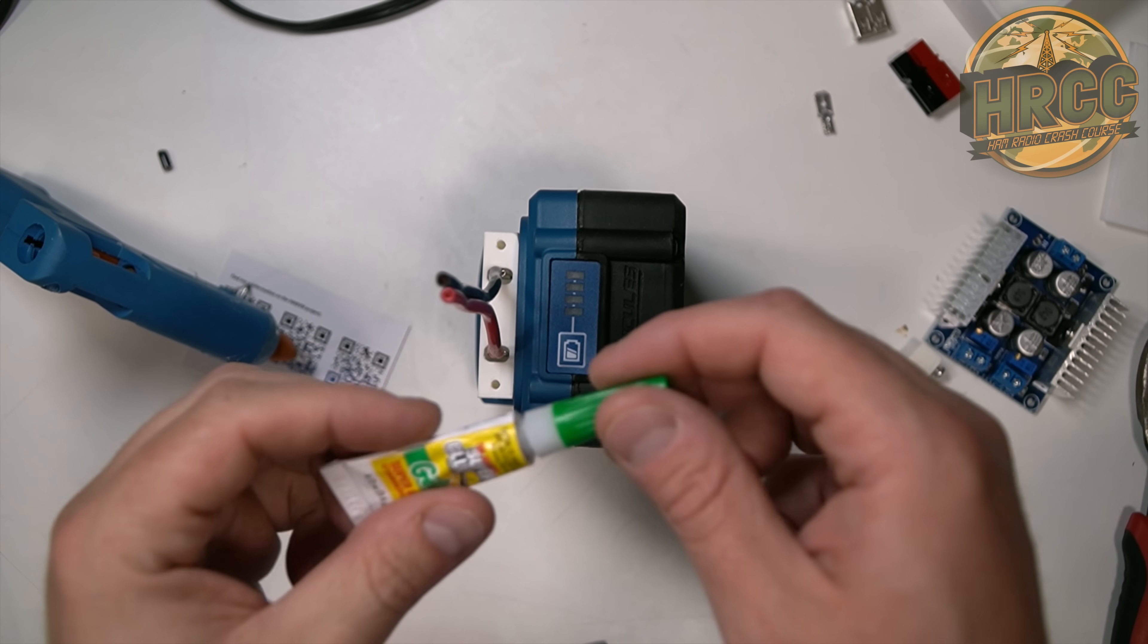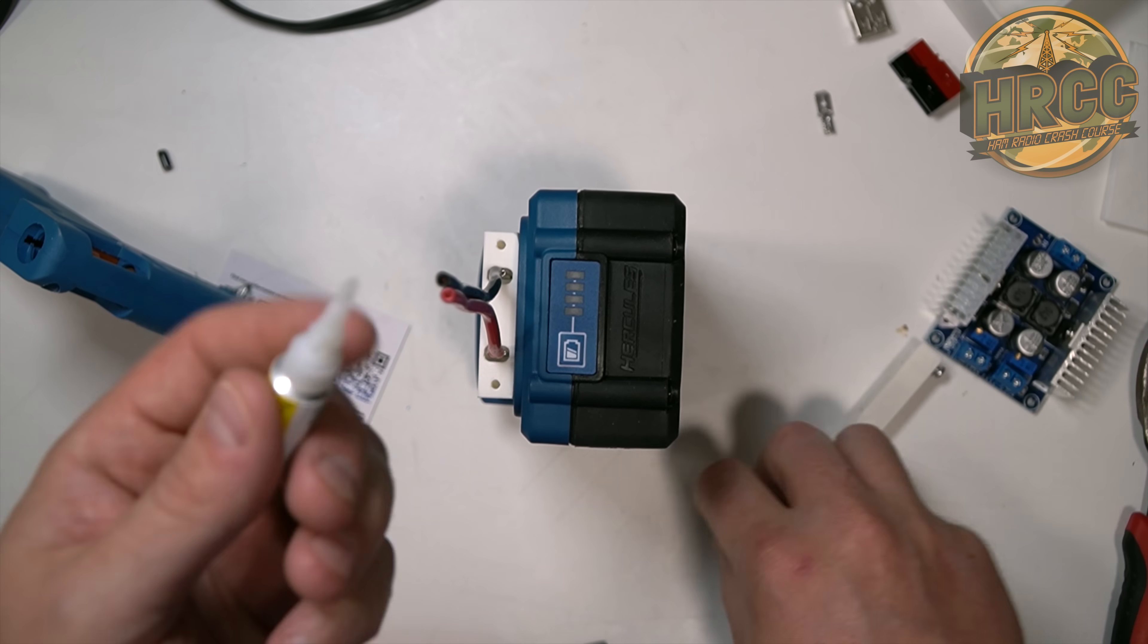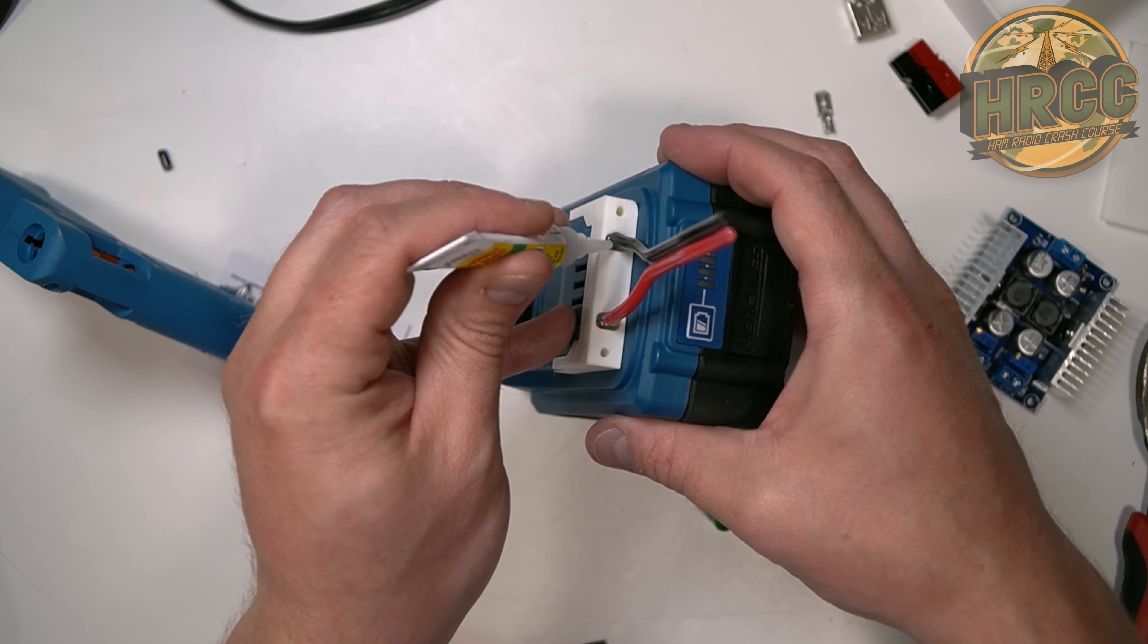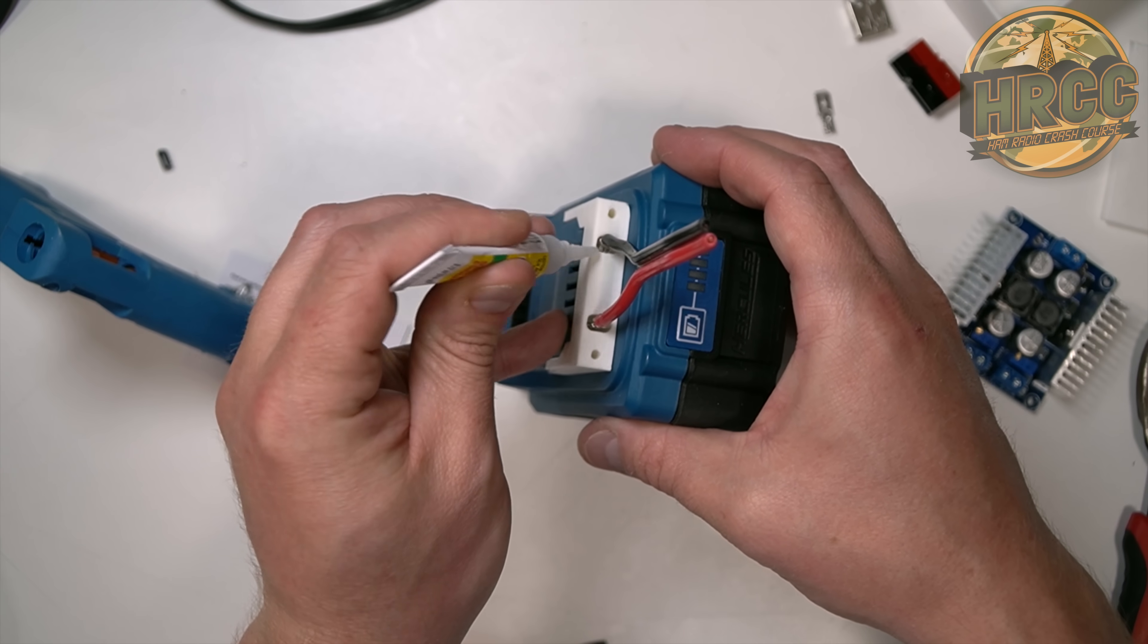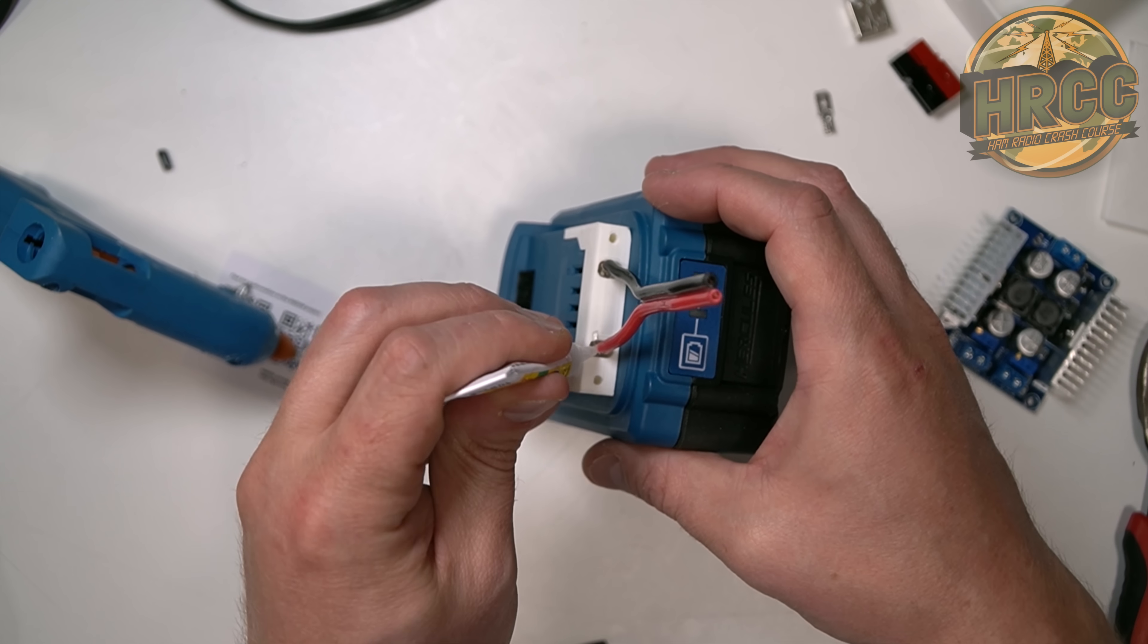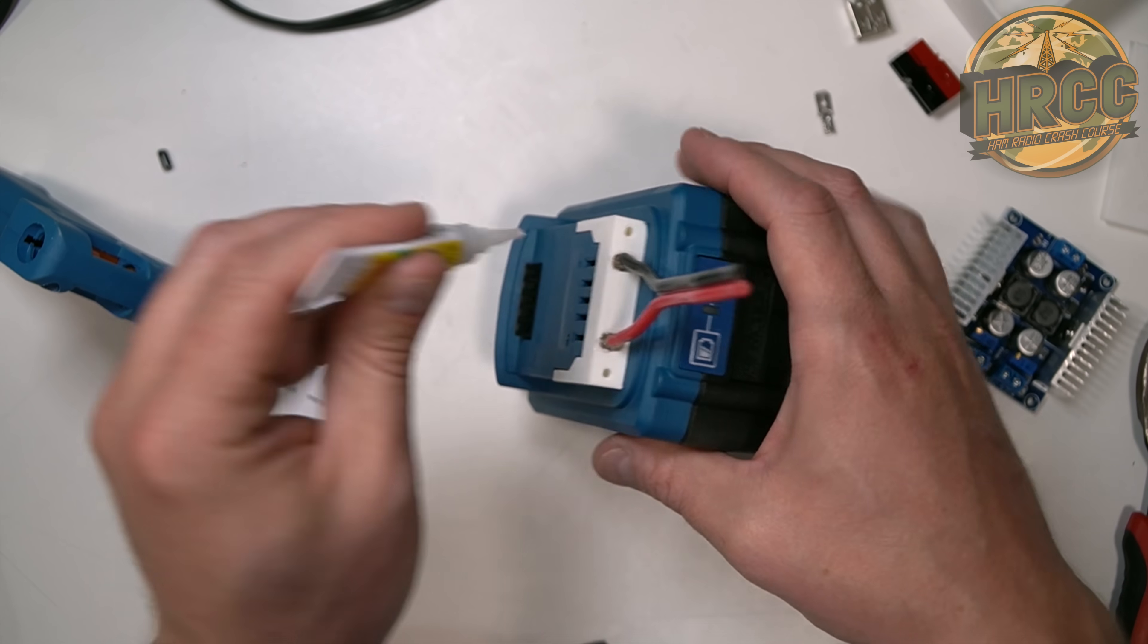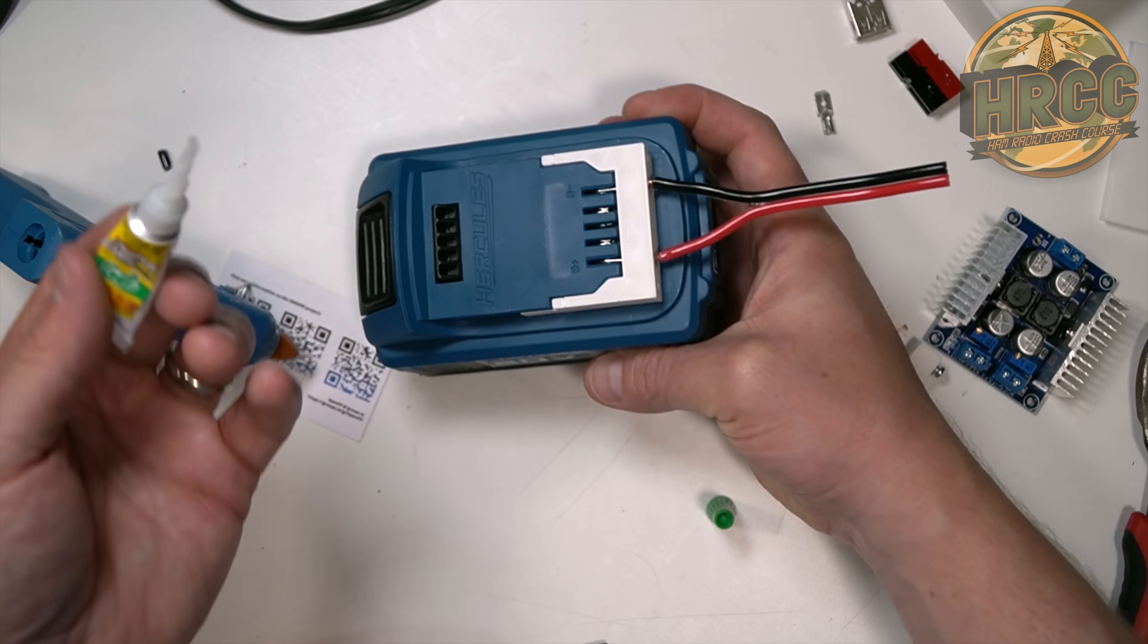I realized since we're using PLA that super glue is going to be a little bit better for this. So I'm just going to drip some down here, let it settle in. This is the gel, so it's a little bit easier to play with. It'll settle down a bit, but then it'll dry and it'll hold them in place. Because I want them to be lined up right there like that.